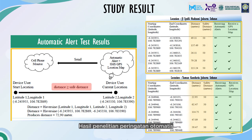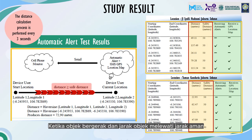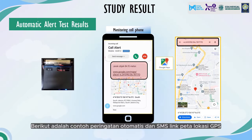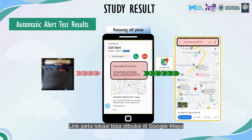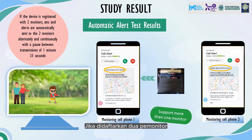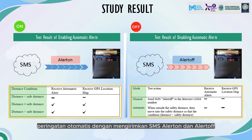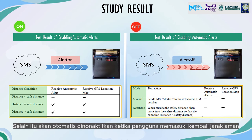Research results on automatic alerts: experiments have been conducted in several different locations. When the object moves and exits the safe distance, the device automatically sends an alert and SMS link of the GPS location map. Experiments have been conducted up to a distance of 30 kilometers and are working well. Here is an example of the automatic alert and SMS link sent by the detector — the location map link can be opened on Google Maps. If two monitors are registered, alerts are sent alternately and continuously with a time lag of 1 minute and 35 seconds. The study also shows that automatic warnings can be enabled and disabled by sending an 'alert on' or 'alert off' SMS, and will automatically deactivate when the user re-enters the safe distance.